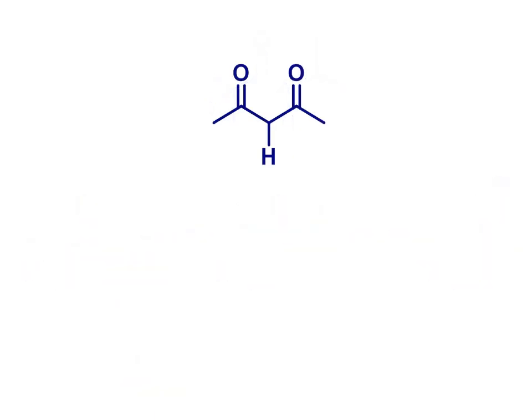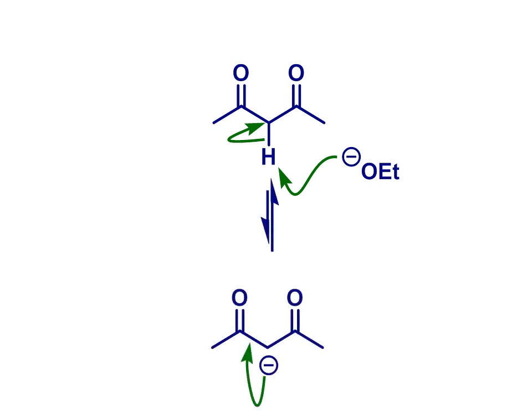In compounds that contain two carbonyl groups on either side of the same C-H or CH2, formation of the enol or the enolate is increasingly favored. Consider deprotonation of this 1,3-dicarbonyl system. If we remove that hydrogen to generate the carbanion initially,